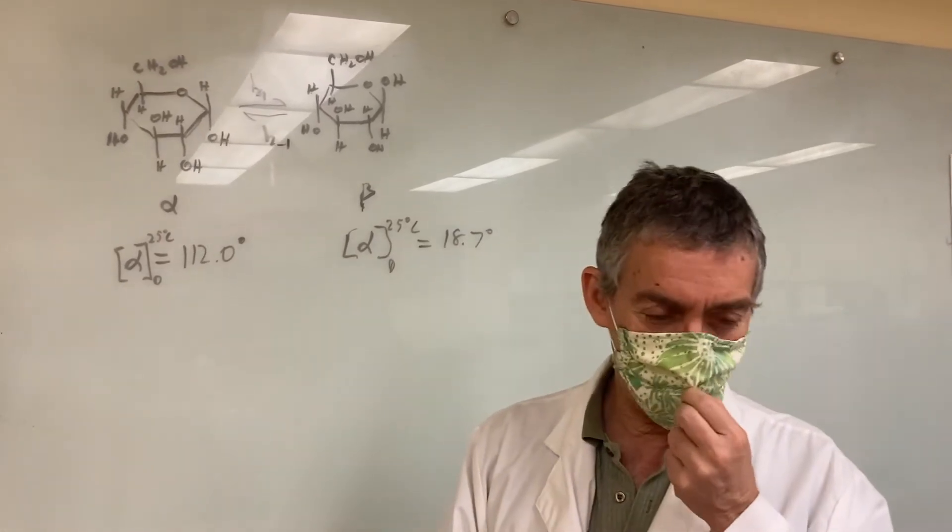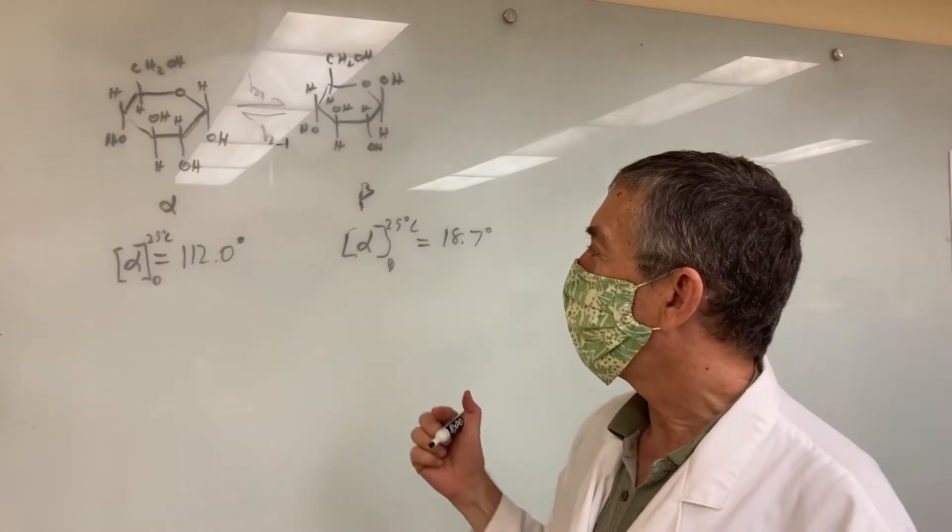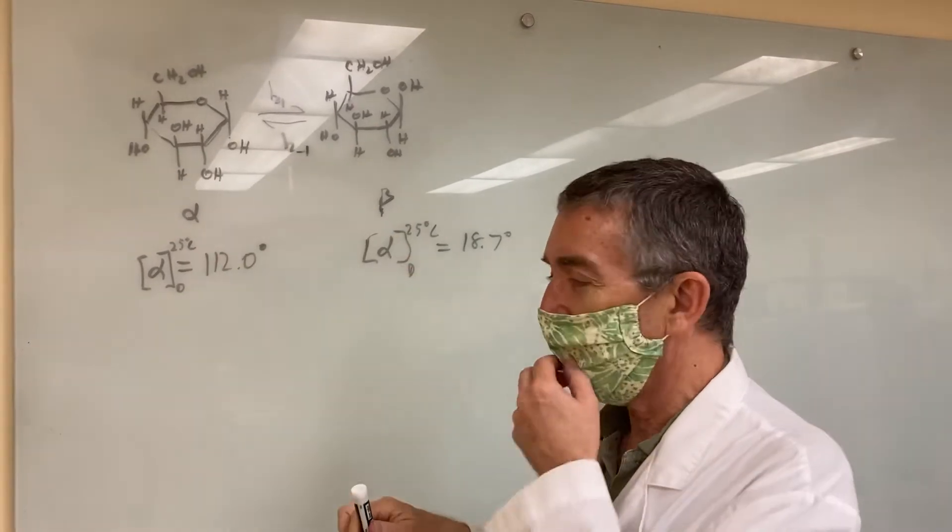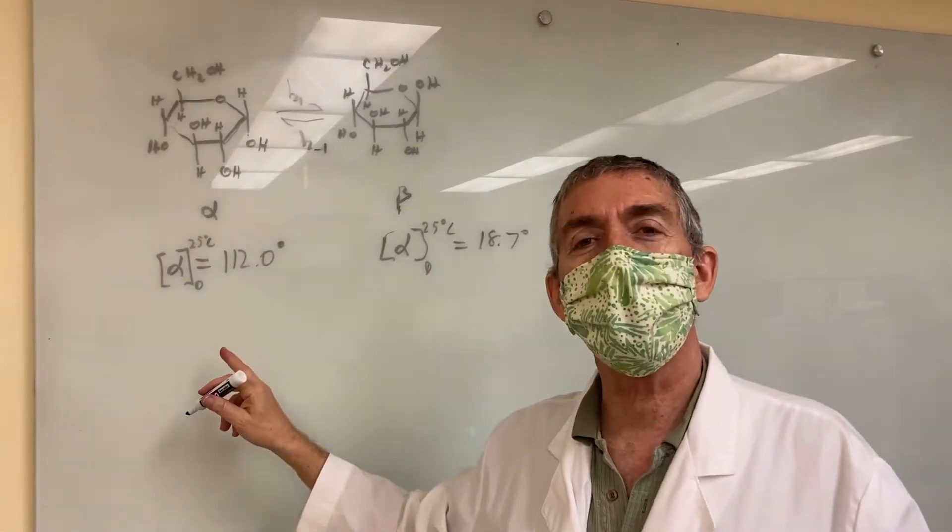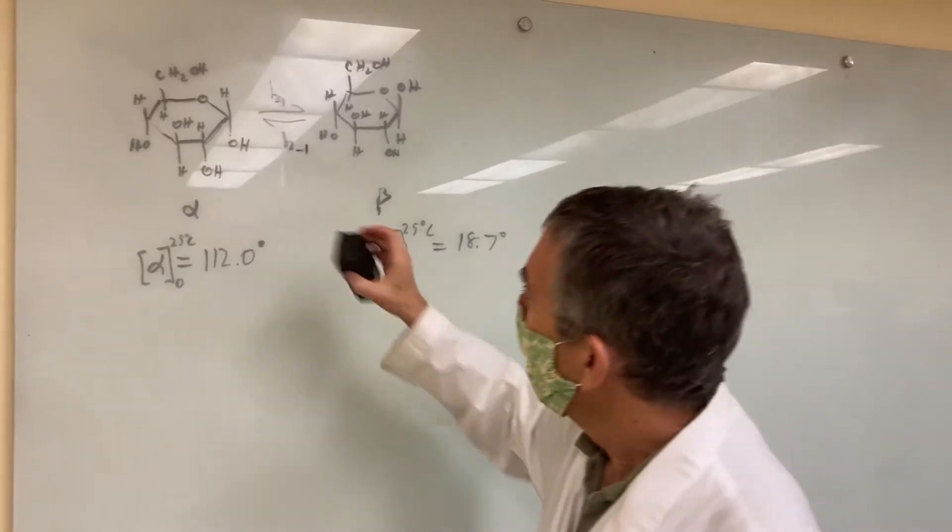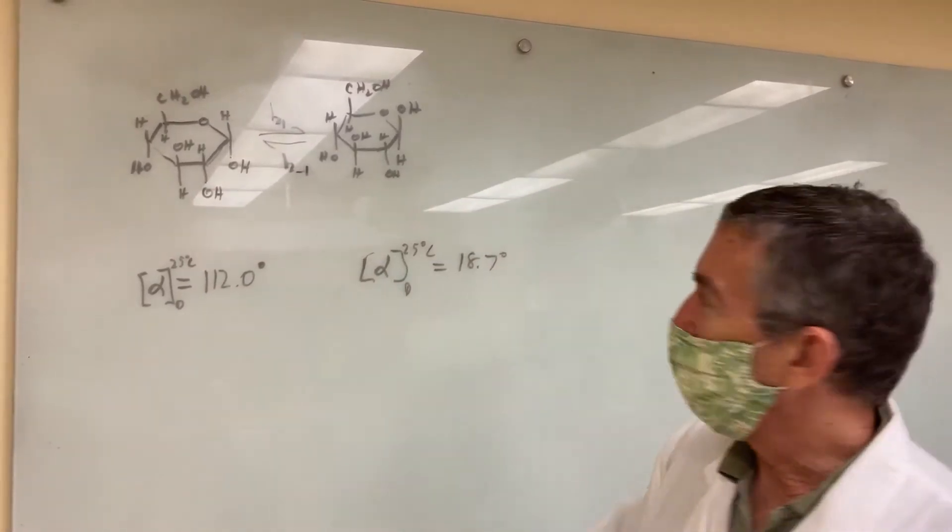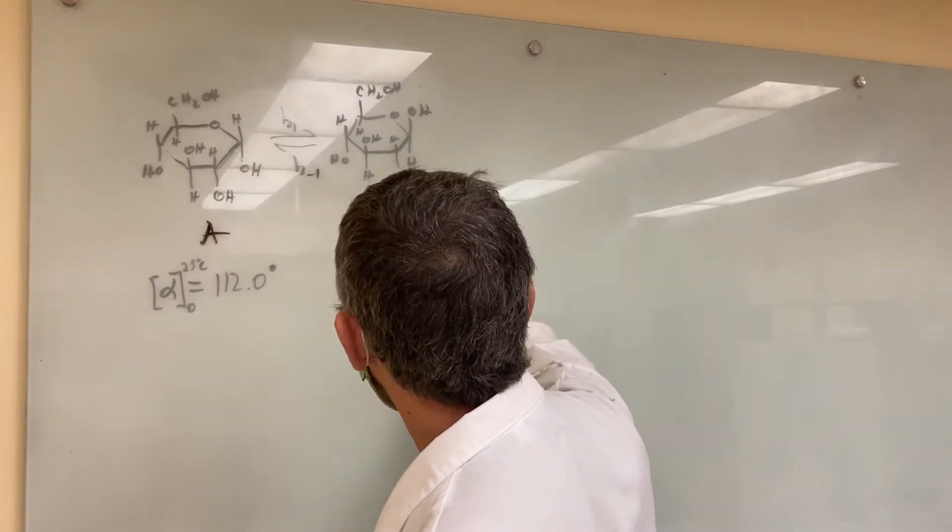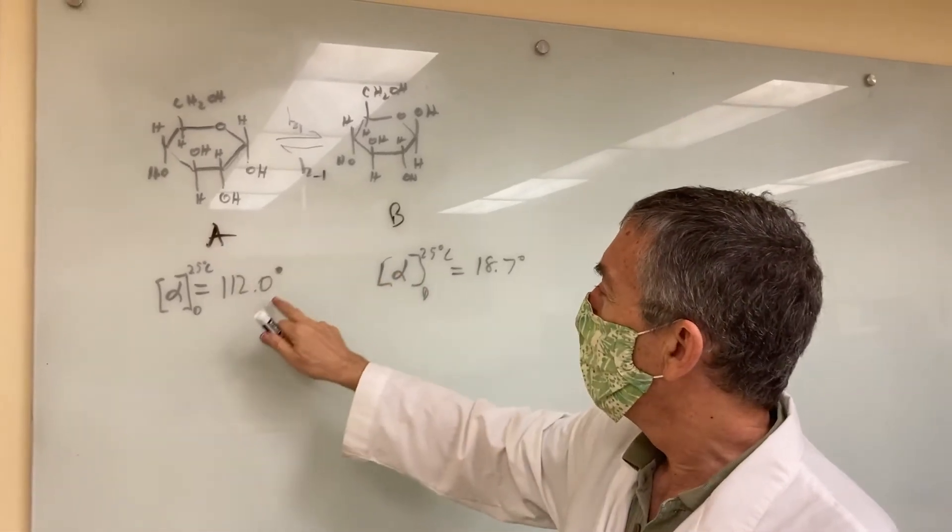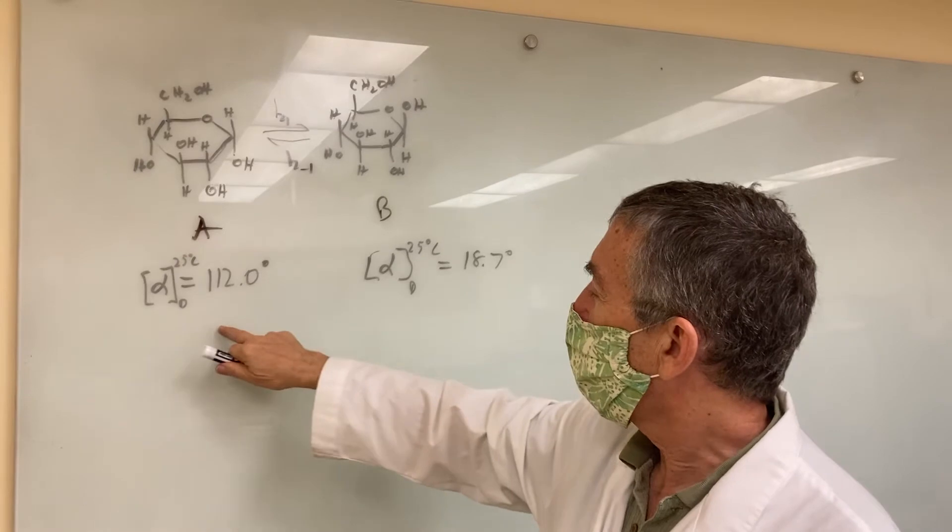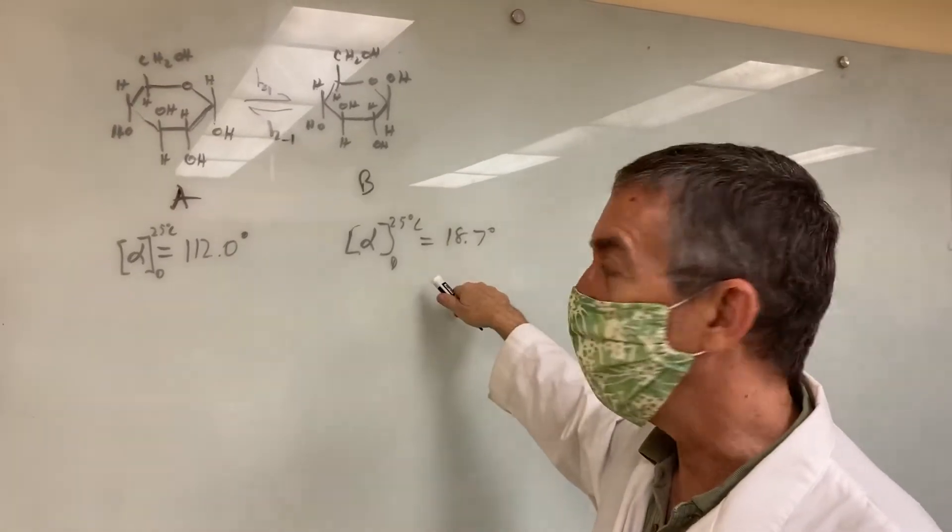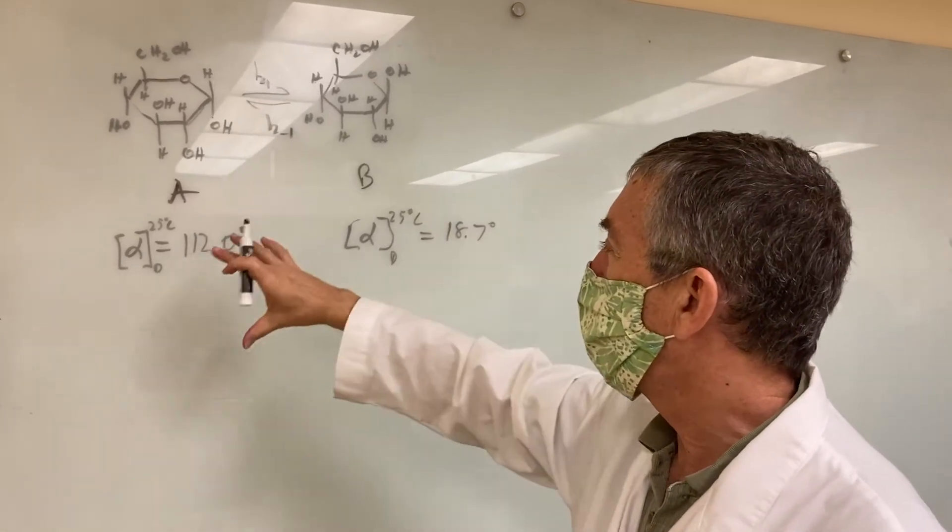Now, there's an unfortunate, unfortunately, the conventions for the way we name things is confusing. So these two forms are alpha and beta, but by convention, the degree of rotation of the light is also called alpha. So we have two alphas running around. Therefore, instead of getting alpha and beta there, I'm going to say A and B. So it's not convention, but it works better for us. Anyway, the alpha or A form, when it's pure, has this rotation of 112 degrees and this of 18.7 for the beta.